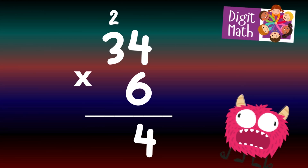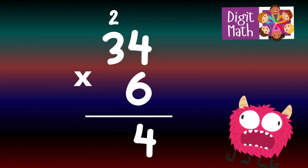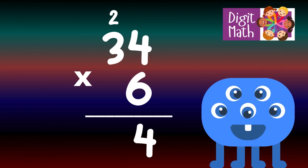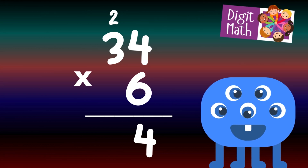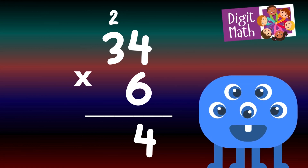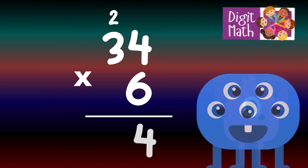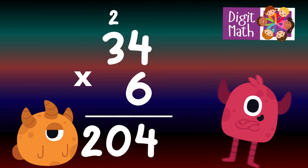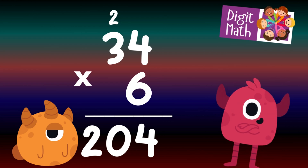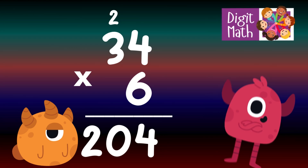Place 4 in the Units column and carry over 2 to the Tens column. In the Tens column, multiply 6 by 3, which equals 18. Add the carried over 2 to 18, making 20. Place 20 in the Tens and Hundreds column. So the final result is 34 times 6 equals 204.